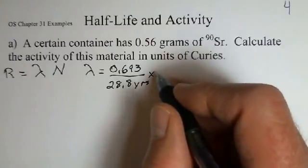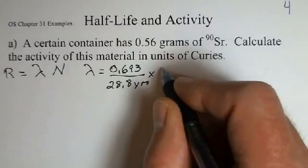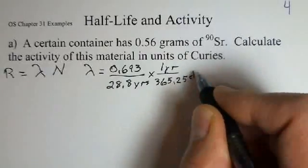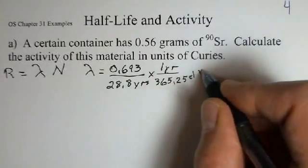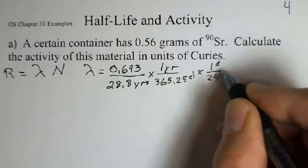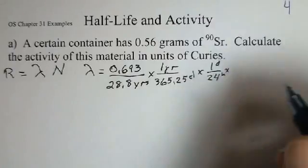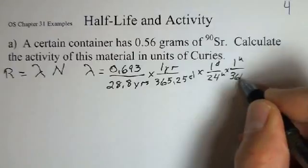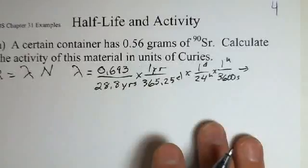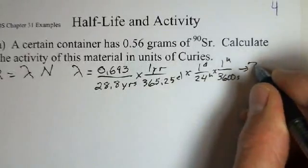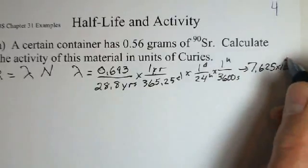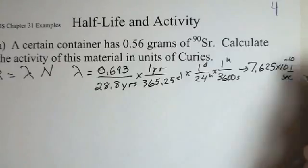We can take advantage that one year, we'll do it brute force, 365.25 is how many days it takes the Earth to go around the sun in one year. And then we have a conversion between days and hours, one day, 24 hours. And then a conversion between hours and seconds, one hour is 3,600 seconds. So applying those, we get our lambda number, our decay constant here, 7.625 times 10 to the minus 10. And we're in units of 1 over seconds now for the lambda.